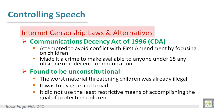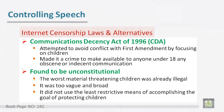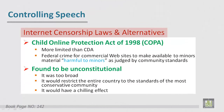Regarding internet censorship laws and alternatives, the main purpose of these laws is to control the internet. The first act regarding this was in 1996, and after that laws were updated or changed, especially regarding children's protection. In this act it is stated that it is a crime to make available to anyone under 18 any obscene or indecent communication.